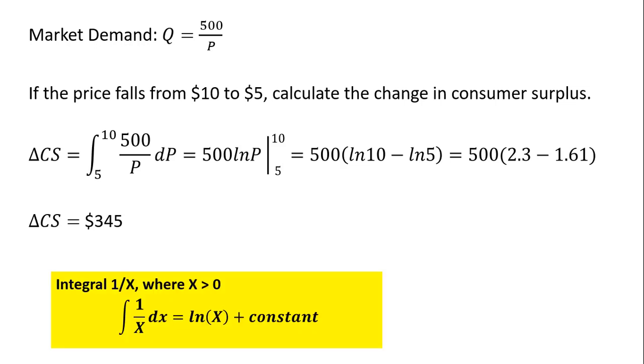So the basic rule I used here in finding the integral of 500 divided by P is the following. The integral of 1 divided by x, where x is greater than 0, is given as follows. It's going to be the natural log of x plus the constant. So in our case, we have some constant up here. Other than 1, we've got 500, so it's just 500 times the natural log of x.